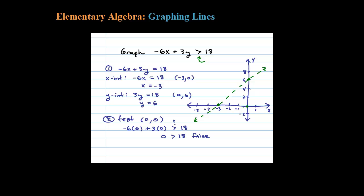Since the origin is not part of the solution set, the region we're going to shade — all the ordered pairs that work — is above the line. Go ahead and choose a value up there, like negative 3 comma 8, and verify that it really does work.